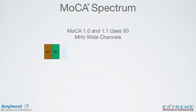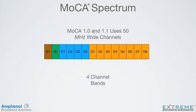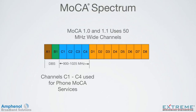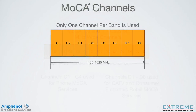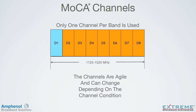In the MOCA bandwidth, MOCA 1.0 and 1.1 use 50 MHz wide channels, broken into 4 channel bands: band A, B, C, and D. A1 and B1 are used for direct broadcast services. C1 through C4, 900 to 1025 MHz, is used for phone MOCA services. Band D, which contains 8 channels, is used for cable TV MOCA services, and any consumer electronic retail MOCA device also uses the D band. Only one channel can be used at a time in each channel band. The channels are agile and can change depending on the channel condition. It normally starts with channel D1 and analyzes the signal to see if it meets the MOCA signal requirements. If so, it stays on that channel; if not, it jumps to the next channel and continues the process until it finds a channel that meets the MOCA signal requirements.